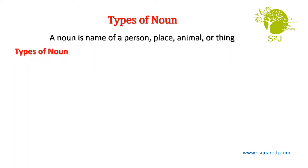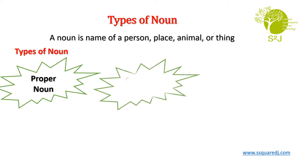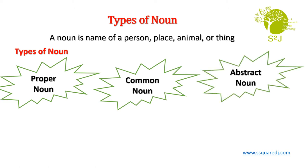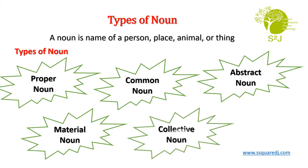Types of nouns are: Proper noun, Common noun, Abstract noun, Material noun, and Collective noun. In this video, we are going to study about abstract noun, material noun and collective noun.